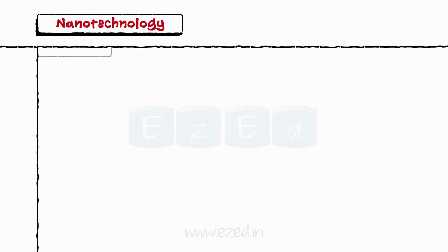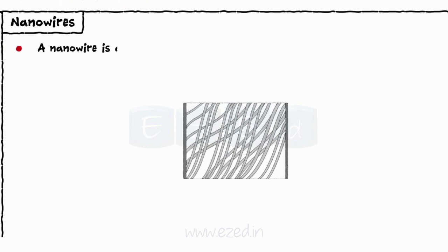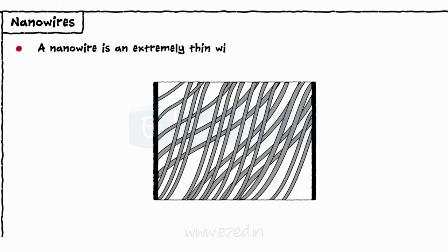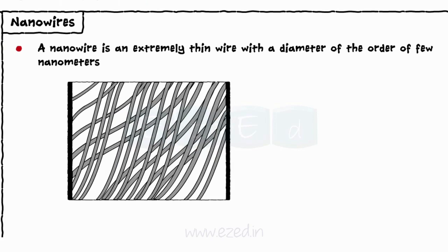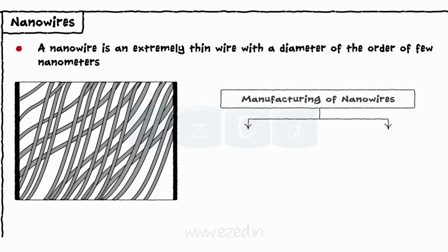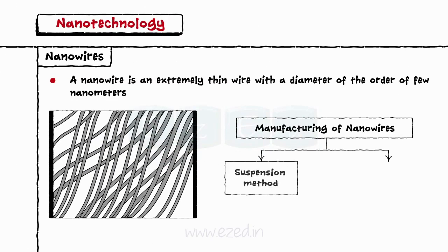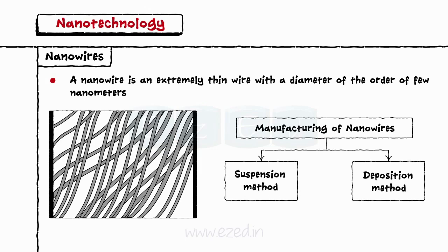The next concept is nanowires. A nanowire is an extremely thin wire with a diameter of the order of few nanometers. There are two processes by which nanowires are manufactured: suspension method and deposition method.